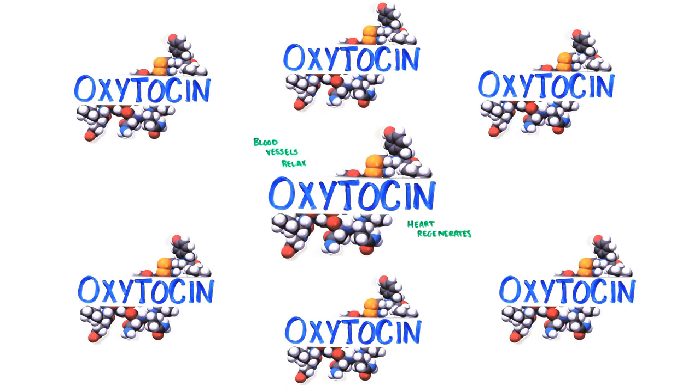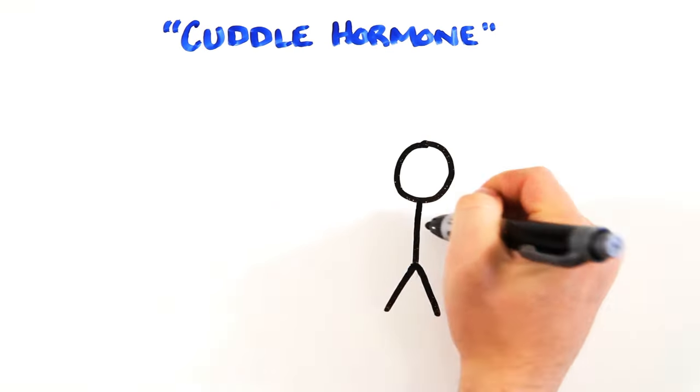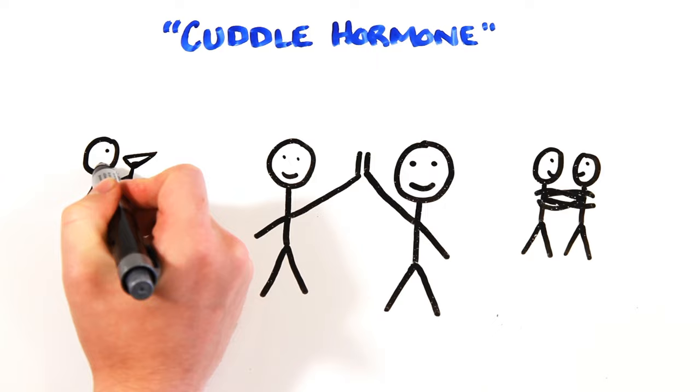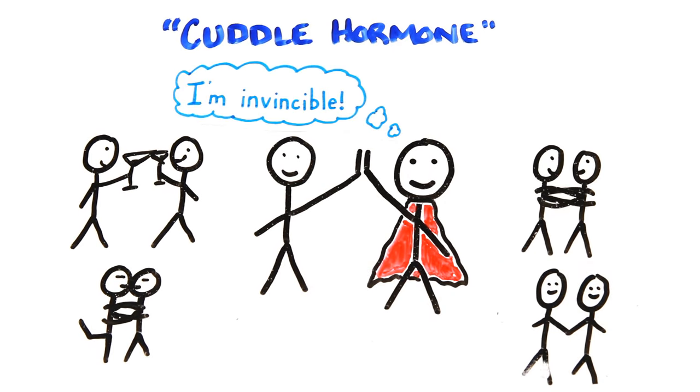So how do we get more oxytocin? It's sometimes dubbed the cuddle hormone because it's released during positive social interactions and while caring for others. People who spend more time with others create a buffer or resilience to stress. So when life gets the best